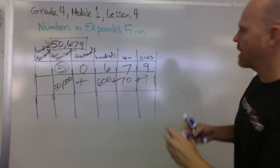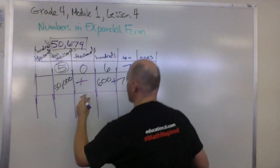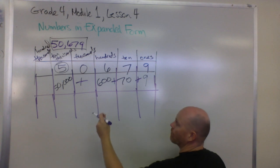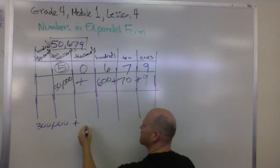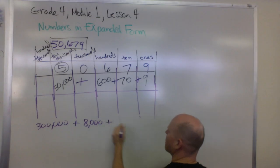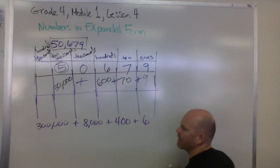So let's say we have something like, we're giving the word form, and the word form says something like 300,000 plus 8,000 plus 400 plus six.